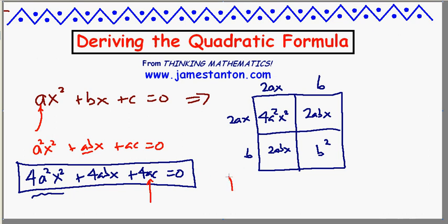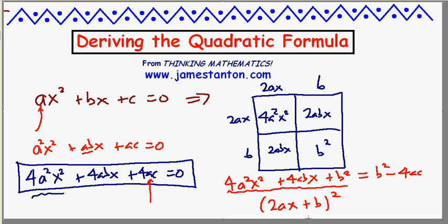Let's subtract 4ac from both sides. So I now have that 4a squared x squared plus 4abx is negative 4ac. And let me now add b squared to both sides, plus b squared plus b squared. This I like very much because the picture just above it, this box, tells me this quantity on the left is really 2ax plus b times itself equals b squared minus 4ac.